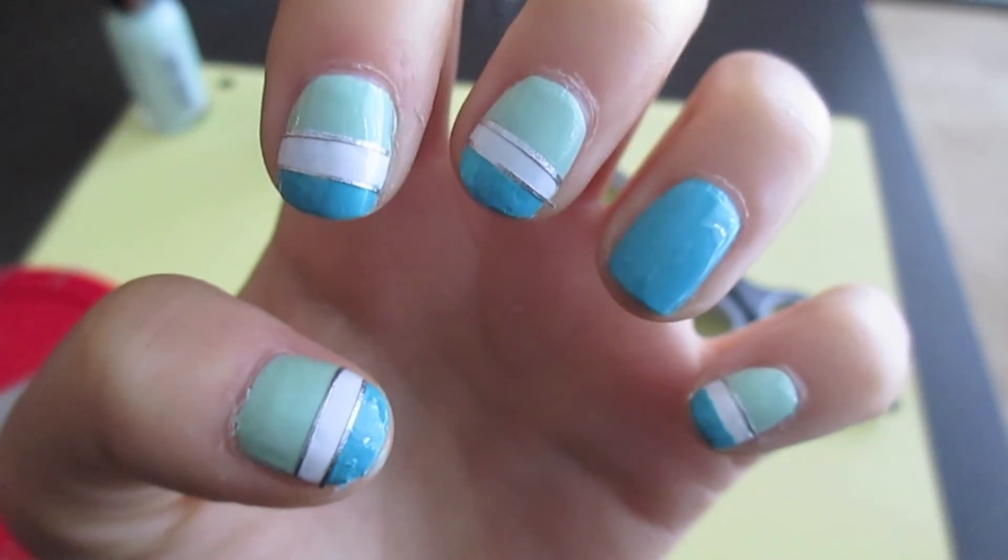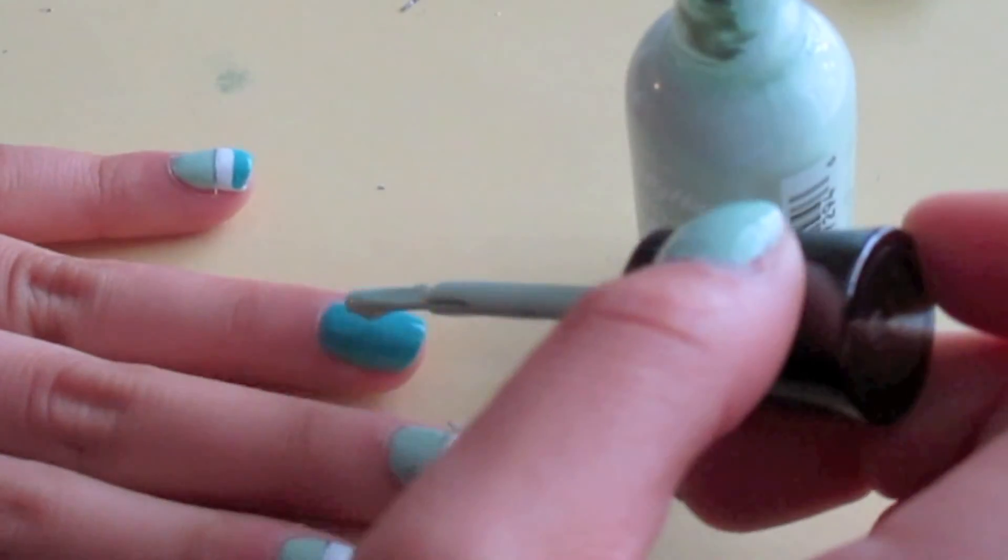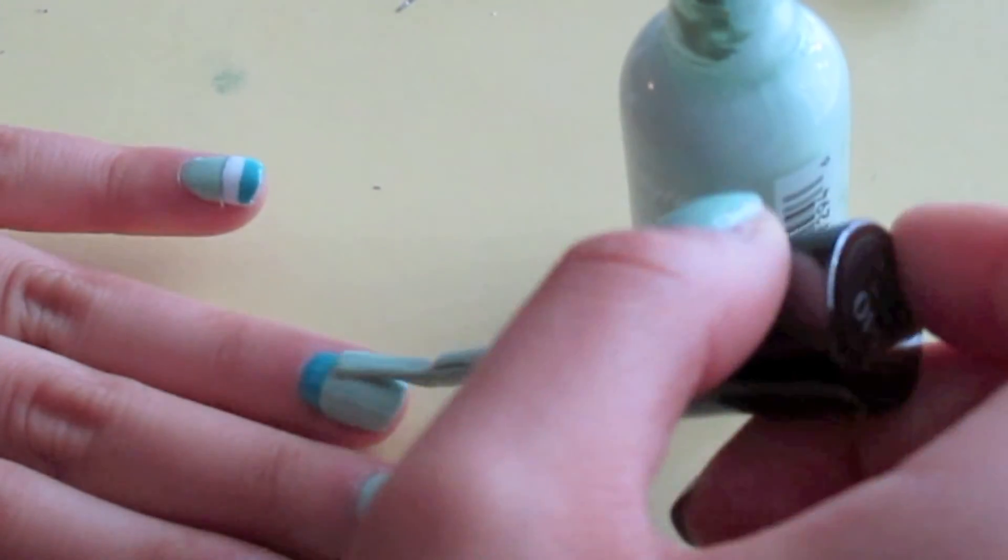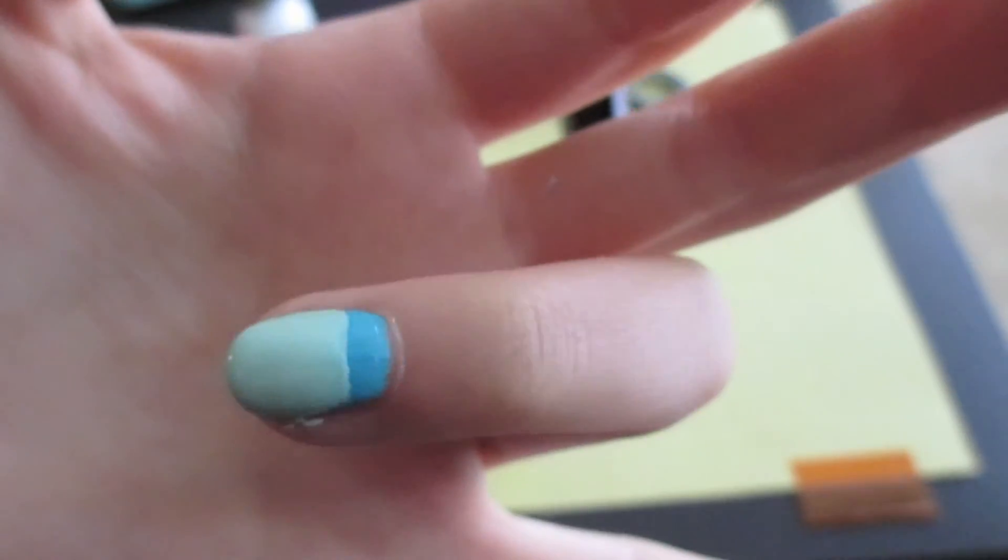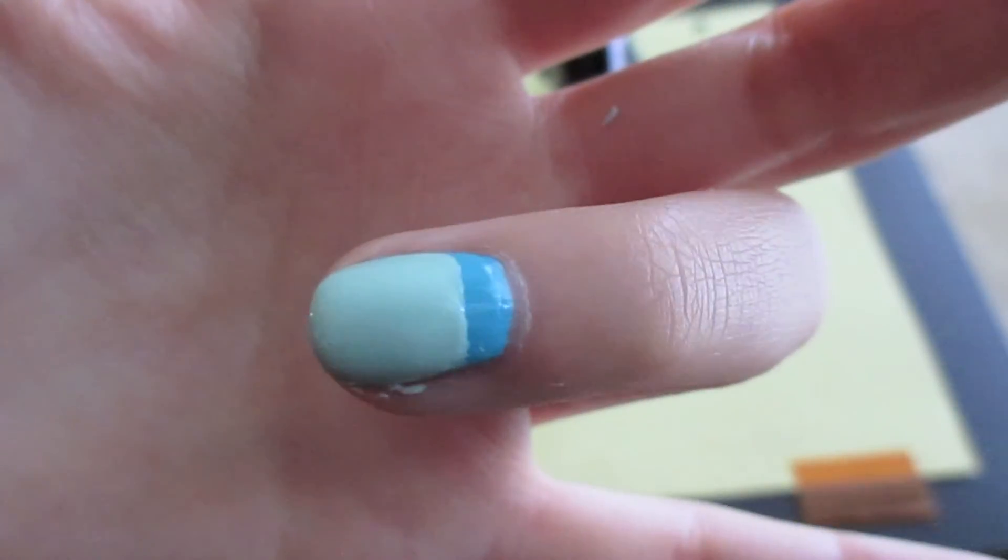Now we're going to deal with the fourth nail. For this nail, I'm going to do a dark to light look. I painted the mint color on three fourths of the nail. Then I used the tape to separate those two colors.